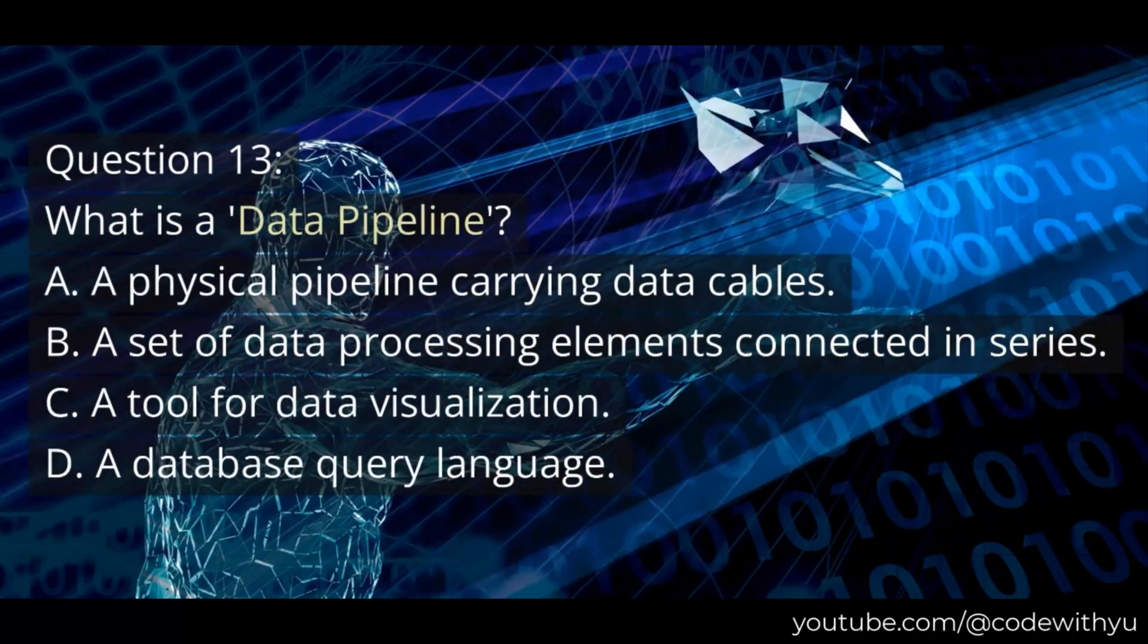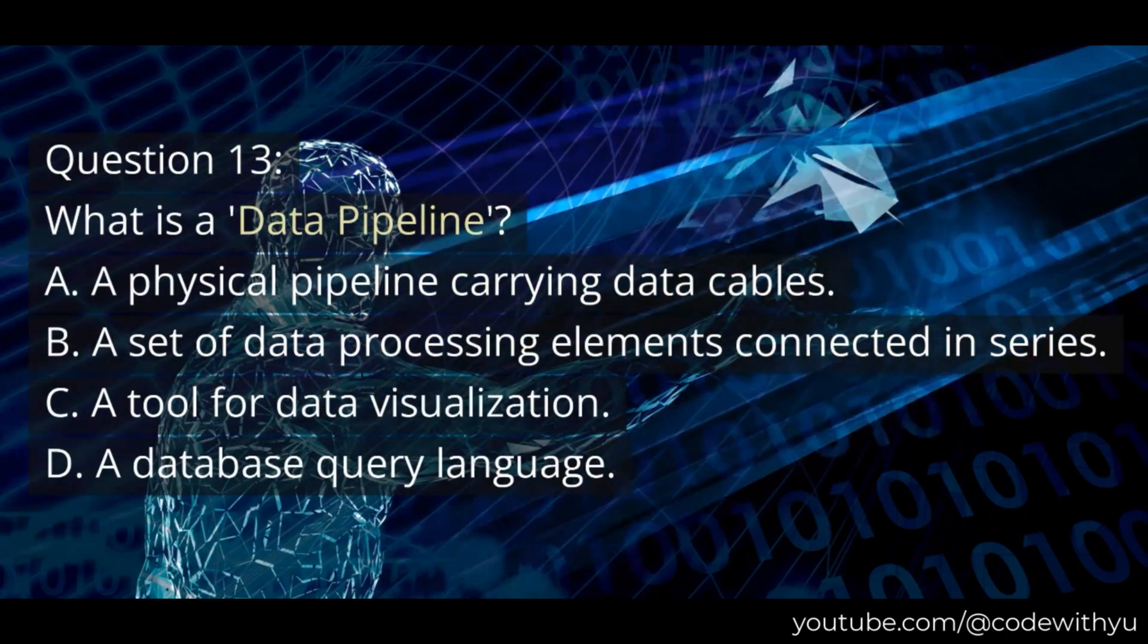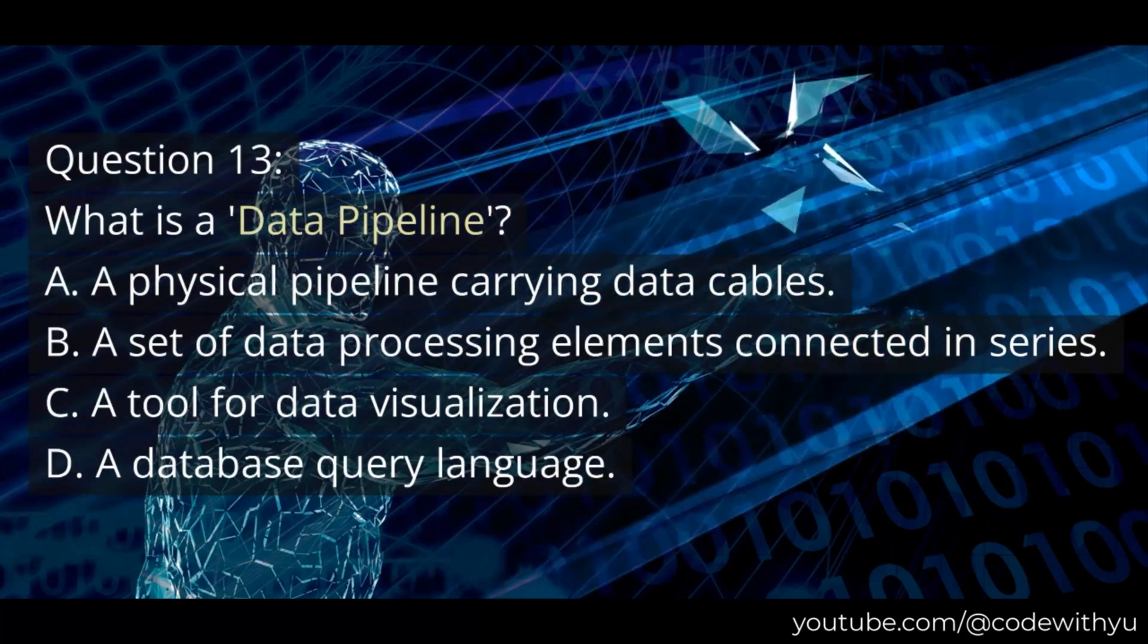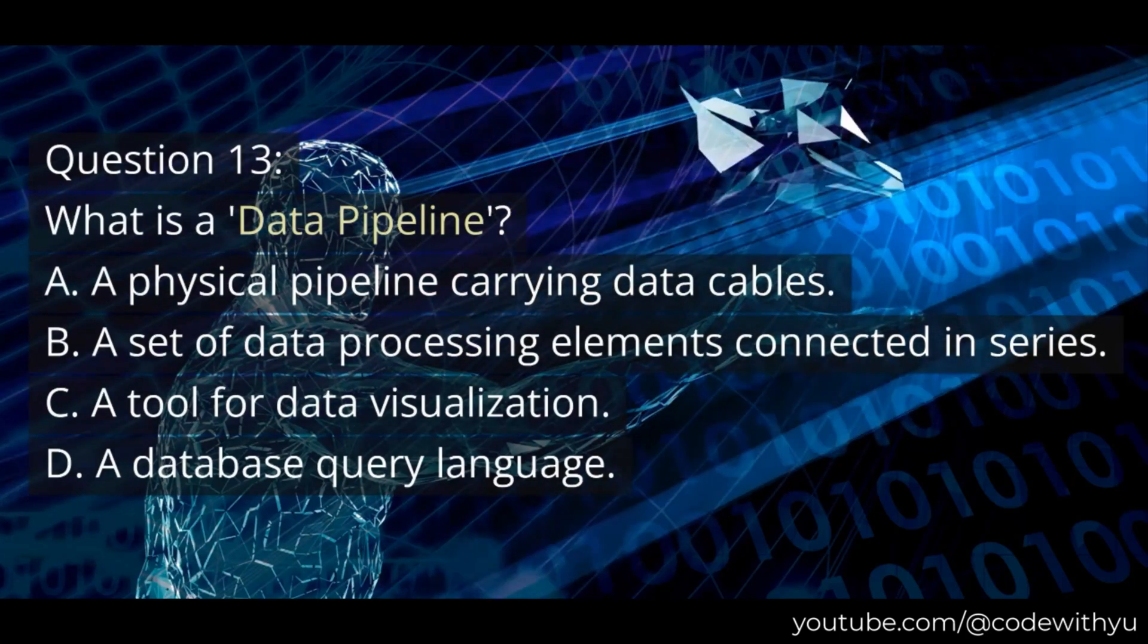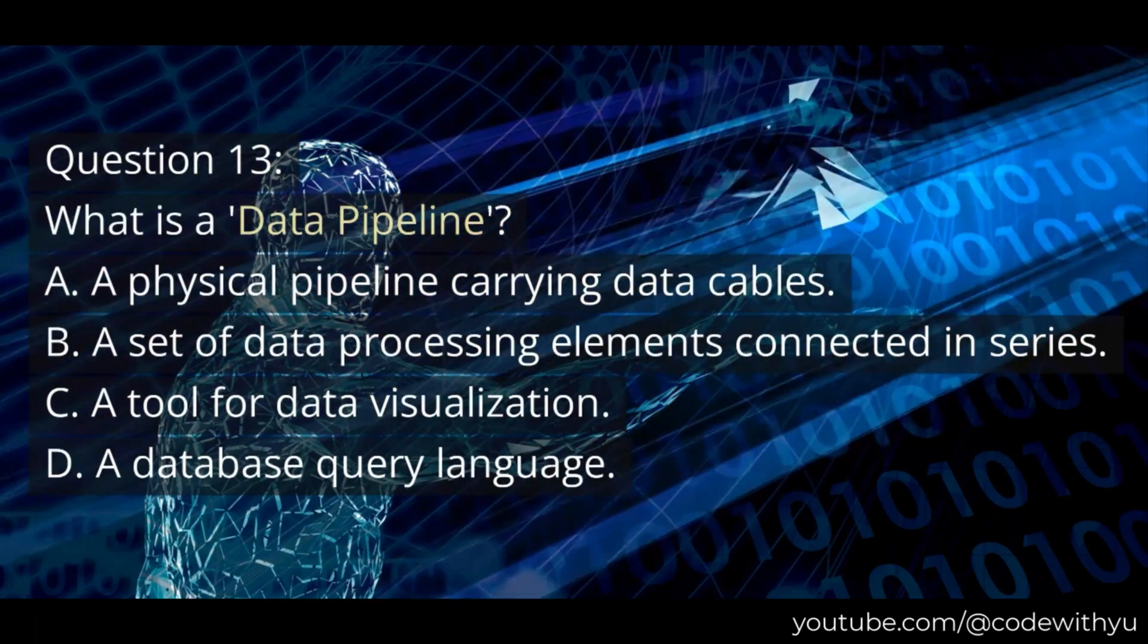Question 13. What is a data pipeline? A. A physical pipeline carrying data cables. B. A set of data processing elements connected in series. C. A tool for data visualization. D. A database query language.